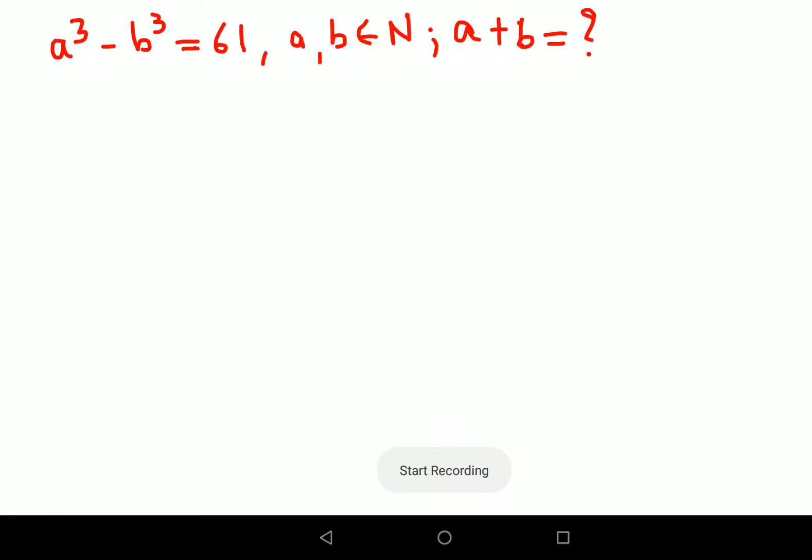Welcome everyone. Today we are going to understand how to find the value of a plus b when they have given us a cube minus b cube equals to 61, and they have also told us that a and b both of them are natural numbers.